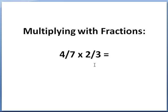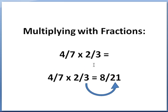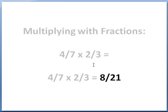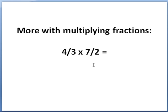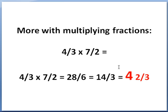Multiplying with fractions is exceedingly easy, because the denominators do not have to be the same. We simply multiply the numerators and multiply the denominators: 4 times 2 is 8, and 7 times 3 is 21, giving 8 over 21. For another example: 4 thirds times 7 halves. Multiply 4 times 7 to get 28, and 3 times 2 to get 6, giving 28 over 6 — an improper fraction. Reducing: 14 thirds, which turns into 4 and 2 thirds.